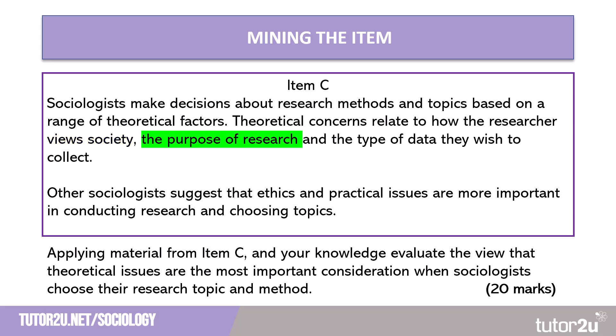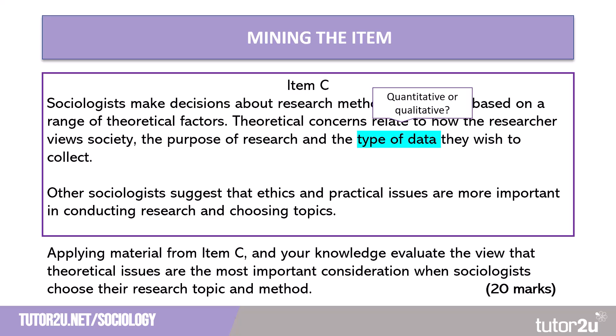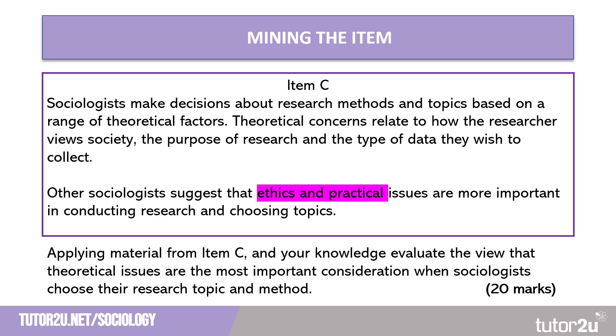The purpose of the research is another hook we can use. Are they looking to prove that we can study society scientifically, or are they looking for individual motivations to give a voice to the underdog? And the type of data — are they going to look for quantitative or qualitative data? Are they going to use primary or secondary research methods? In the second part of the item, ethics and practical issues are raised. So are these more important? Whilst theoretical issues are named as the most important consideration, this is a debate question, so we should use ethical and practical issues and make a judgment on which is most important.